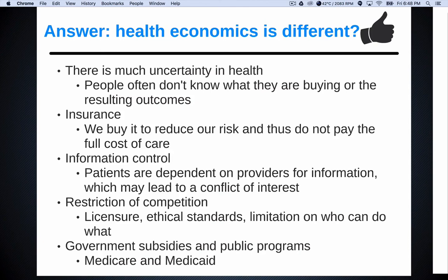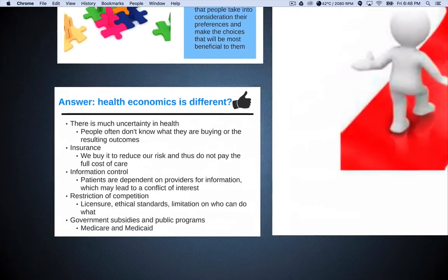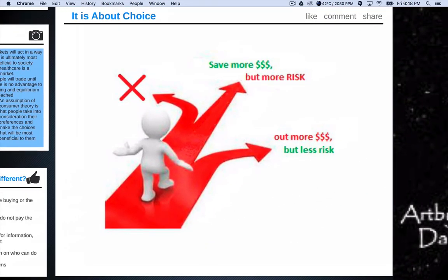Finally, there are government subsidies and public programs. The biggest ones include Medicare, Medicaid, the VA healthcare system, military medicine, and Indian Health Service, just to name a few. It's all about choice — how much money do you spend for risk or less risk? Which insurance policy do you buy? Do you spend the money to join a gym and reduce the risk of heart disease or diabetes? It's about the money and it's about the risk.